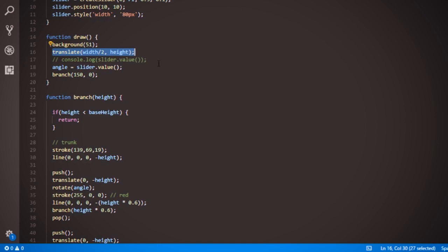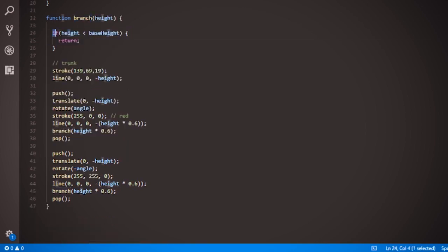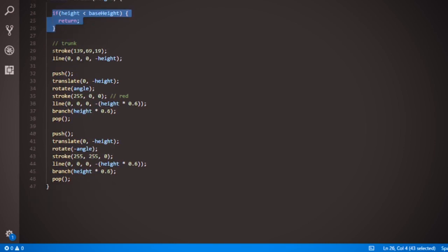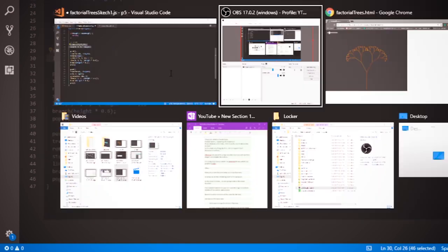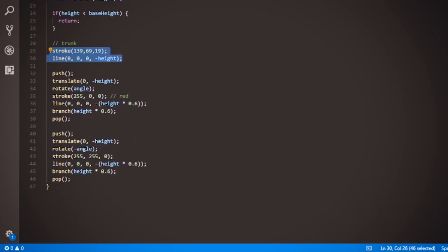So we want to first move the origin. Then we are calling the branch function that actually has the logic to draw the tree. Let's ignore this part now because this is the base case you might have already known, but ignoring that, these two lines are used to draw the trunk of the tree. That is nothing but this portion of the tree.